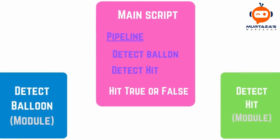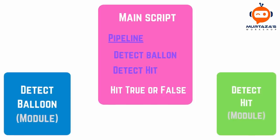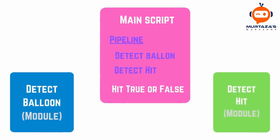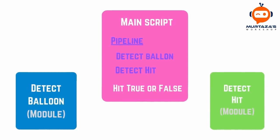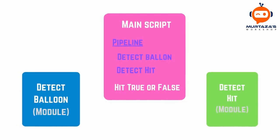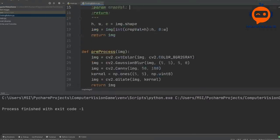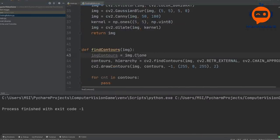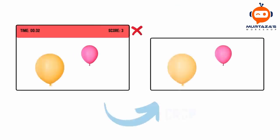The idea was to write a main script that will handle the pipeline of the complete project, and then we will have separate modules for detection of the balloon and detection of the hit within the balloon. The modular structure makes it easier to write the code and also makes it easy to maintain it later on.